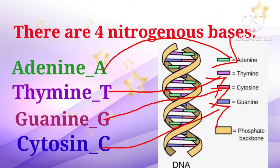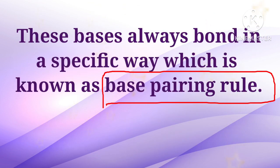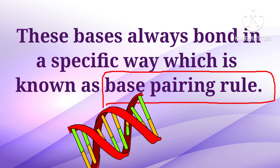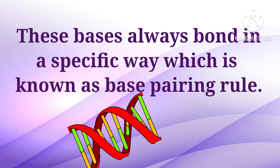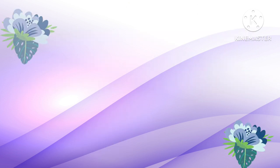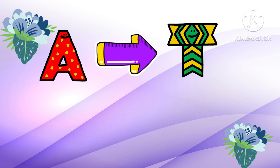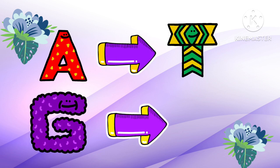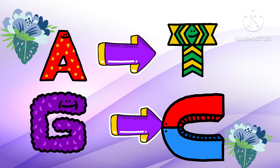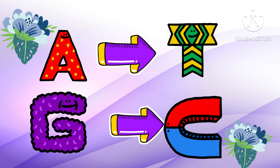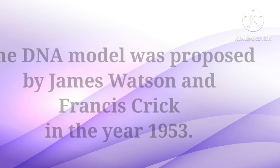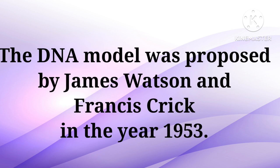There are four nitrogenous bases: Adenine, Thymine, Guanine, and Cytosine. These bases always bond in a specific way, which is known as the base pairing rule. Adenine always combines with Thymine, and Guanine pairs with Cytosine.